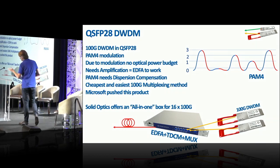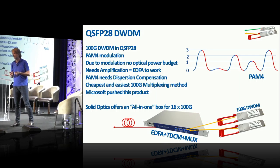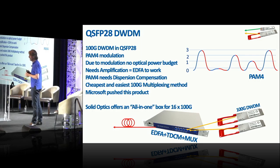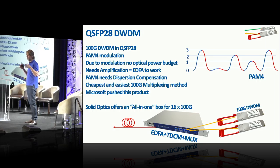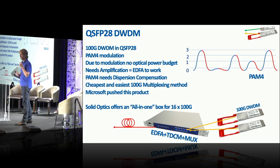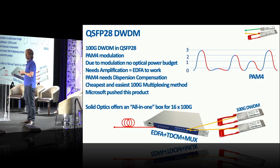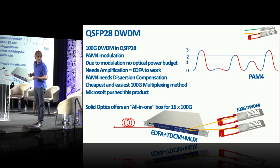There is a QSFP28 solution using PAM4 modulation — not as powerful, but it fits within the power budget. However, because so much power goes to modulation, there's almost no optical budget left, so you need a box to amplify the light. PAM4 also needs dispersion compensation, requiring a box with an EDFA and a tunable dispersion compensator. Microsoft has been pushing this technology for years — deploying 32 times 100G over 70 kilometers to their data centers.